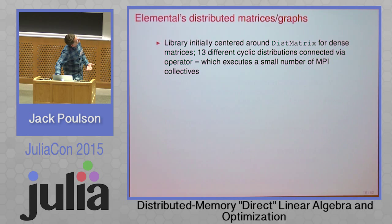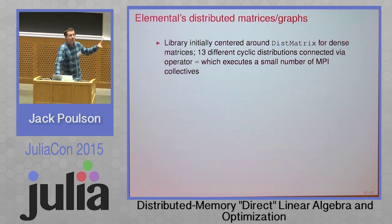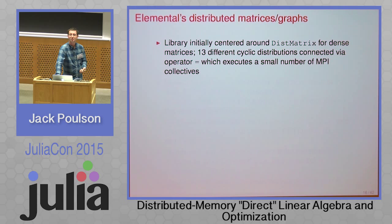To summarize the data distributions: the DistMatrix class for dense distributed matrices already had 13 different data distributions. Really the user would only have to interact with one of them. For those familiar with ScaLAPACK, it was just a special case.